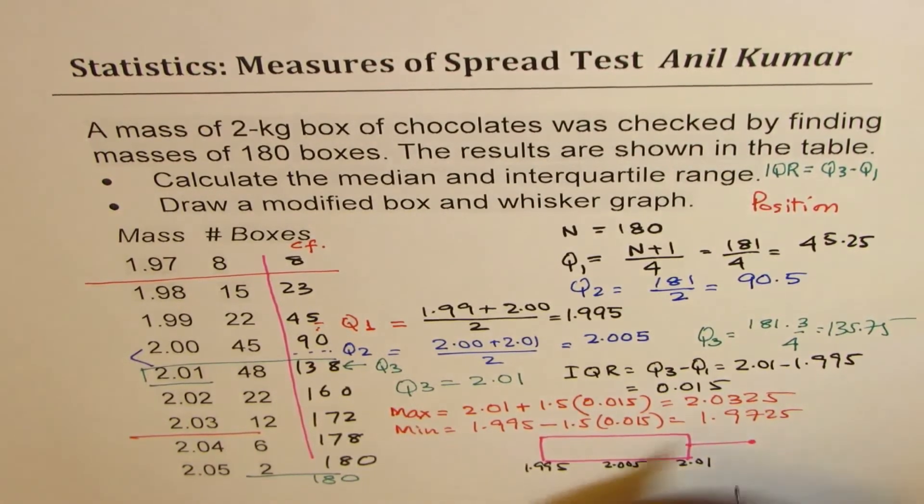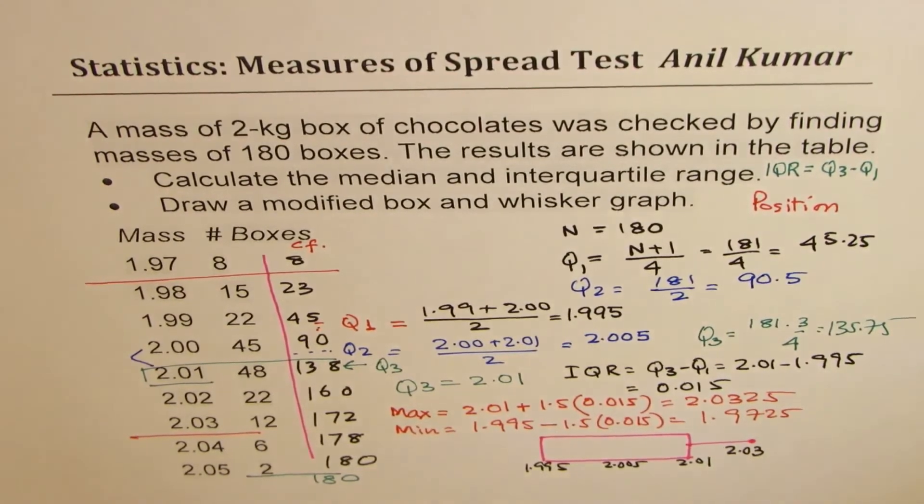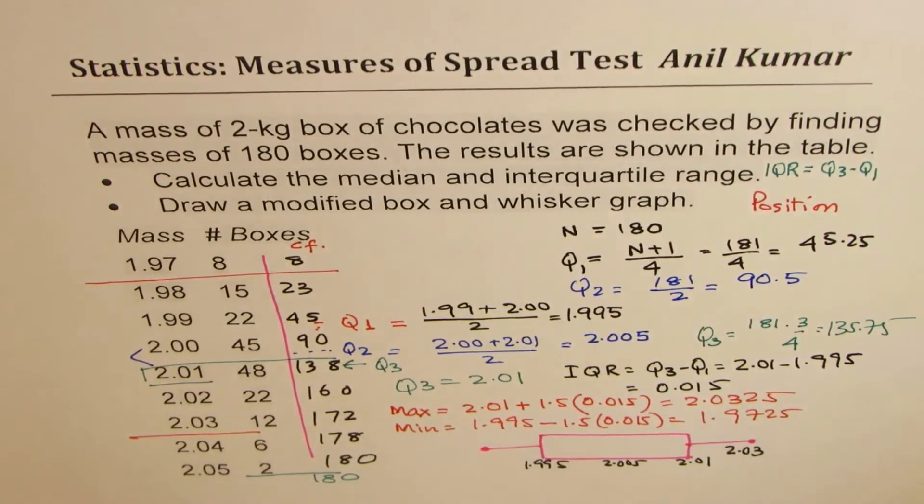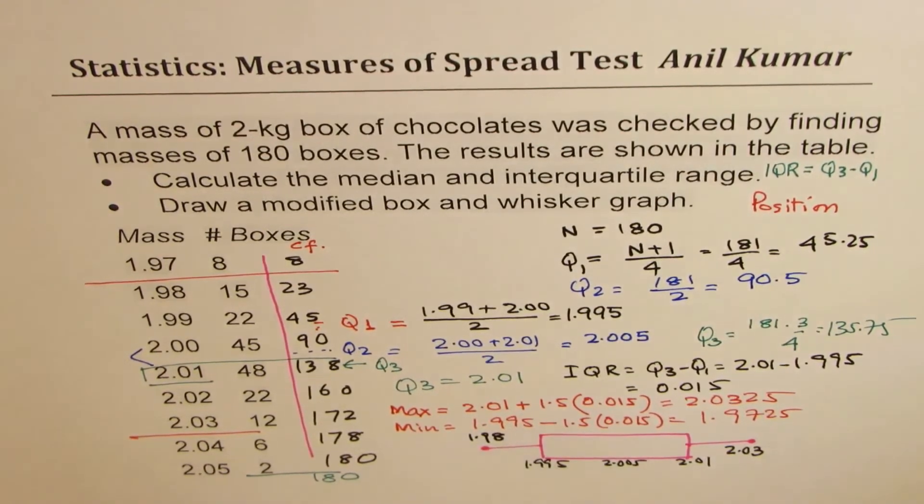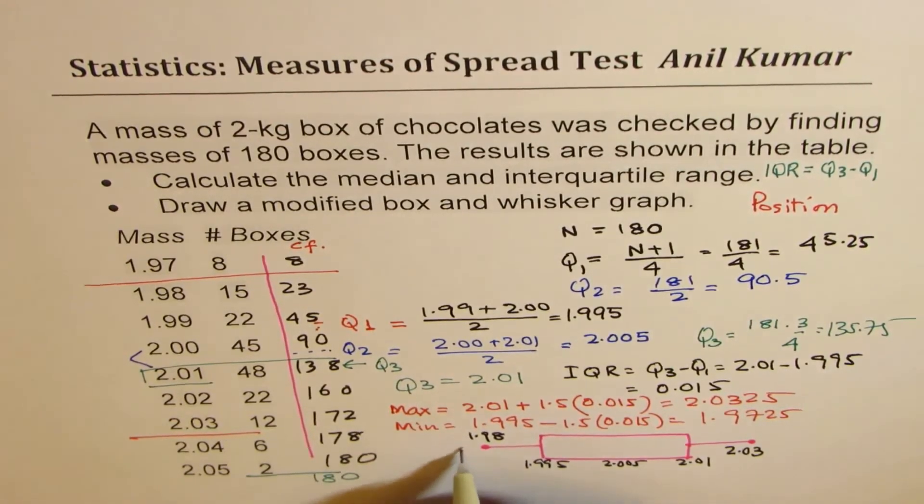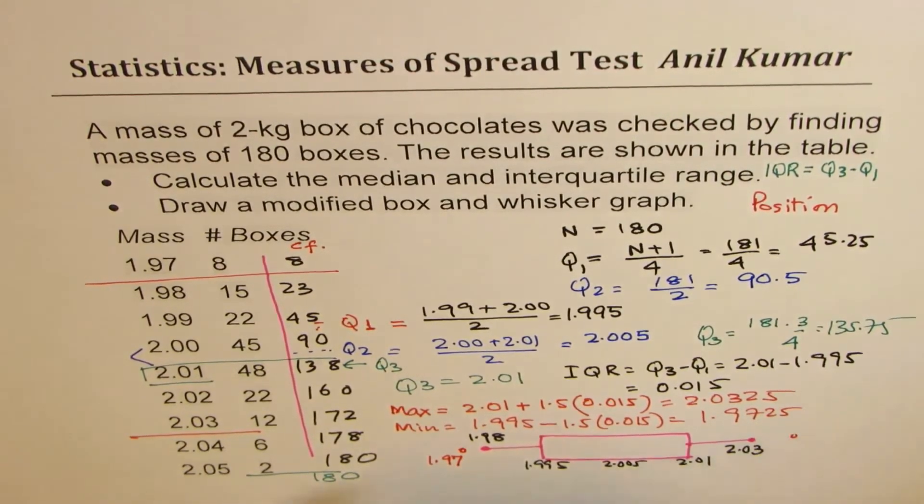And on the lowest datum side we can go to 1.98. We do have 2 outliers here. I mean on both the sides we have outliers.